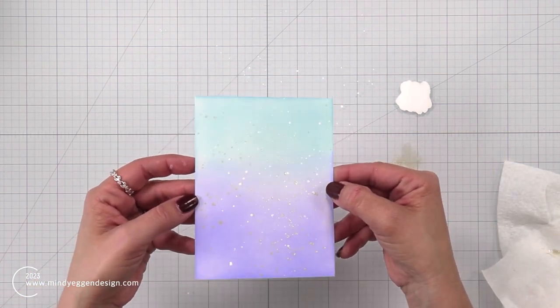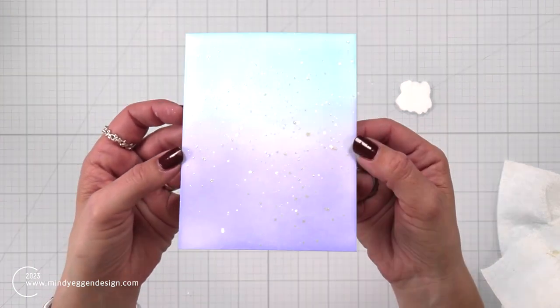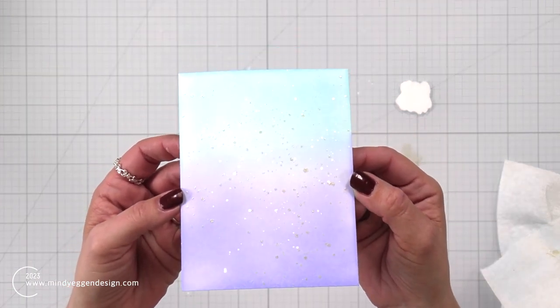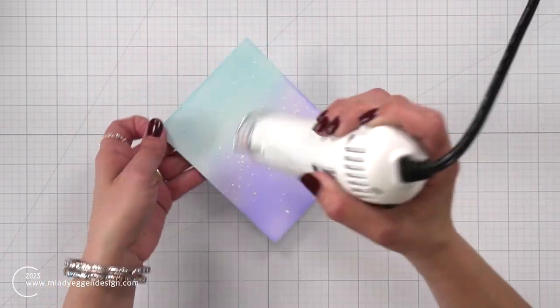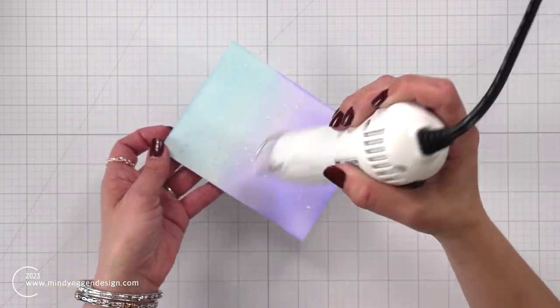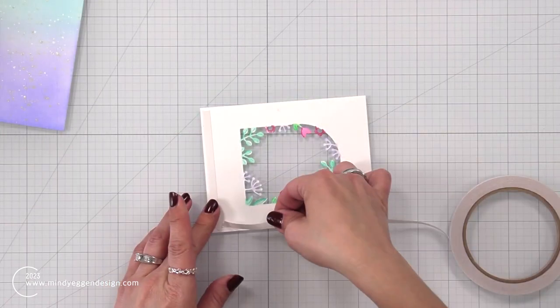And this panel is going to work beautifully with the shaker elements that I have picked out. So I am going to help dry the panel because it can stay wet a little longer. So I used my heat tool for that.